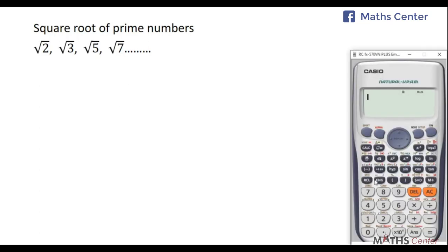Let's take the square root of 2 on the calculator. The result is 1.414213562... The calculator is designed to give only a limited number of decimal places, but this continues to infinity. You can see there is no clear repeating pattern in those decimals.